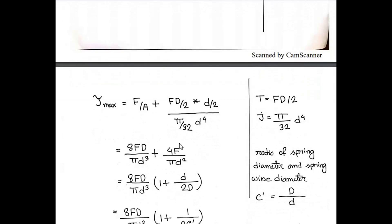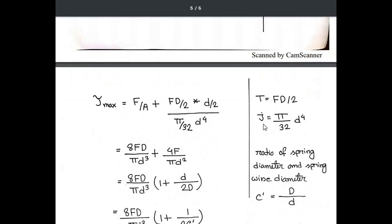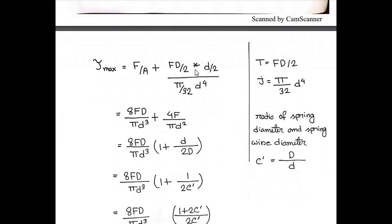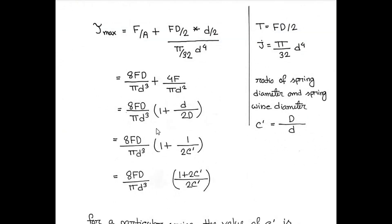If you want to know more about this, you can ask your professor who has done PhD on it. After doing calculation, we've derived this equation. Here c prime is the ratio we've considered - c prime is the ratio of spring diameter and spring wire diameter.